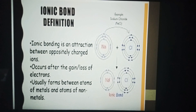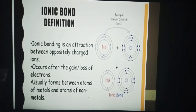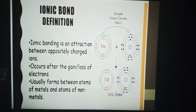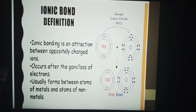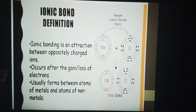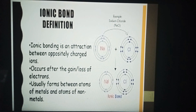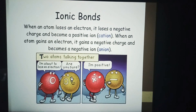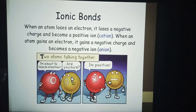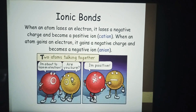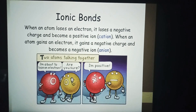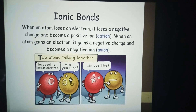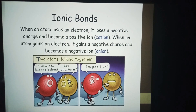Ionic bonding is an attraction between positively charged ions. It occurs after the gain or loss of electrons, and usually forms between atoms of metals and atoms of non-metals. When an atom loses an electron, it loses a negative charge and becomes a positive ion known as a cation. When an atom gains an electron, it gains a negative charge and becomes a negative ion called an anion.